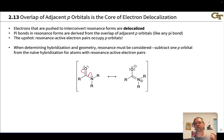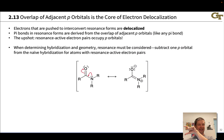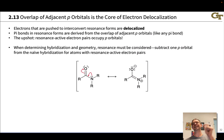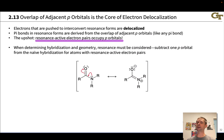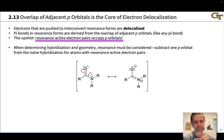Pi bonds in resonance forms are derived from the overlap of adjacent p orbitals — you saw this back in introductory chemistry with valence bond theory. Pi bonds are made from p orbitals overlapping in a side-on fashion, and the same is true in delocalized organic molecules. Any pair of electrons that we engage in resonance is occupying a p orbital, and this has very important consequences for geometry and hybridization.